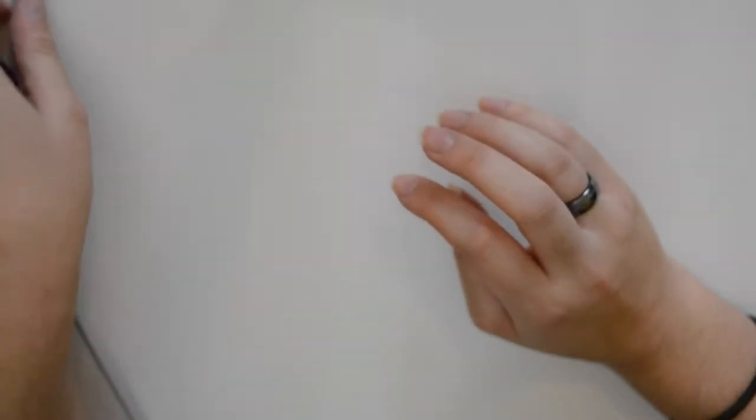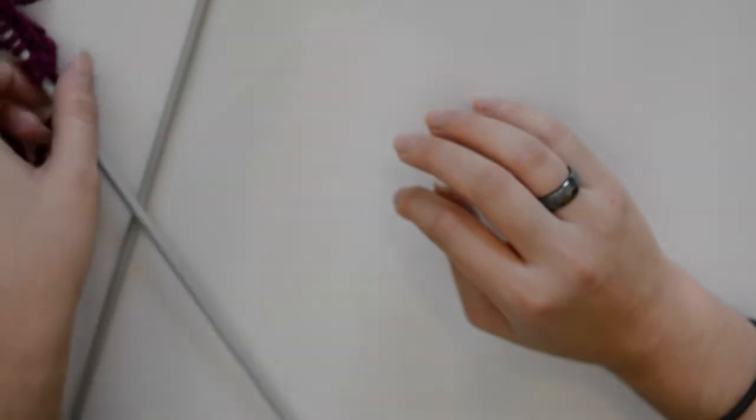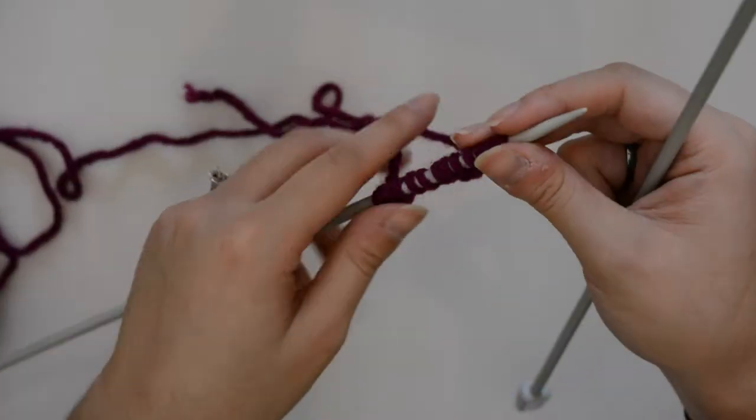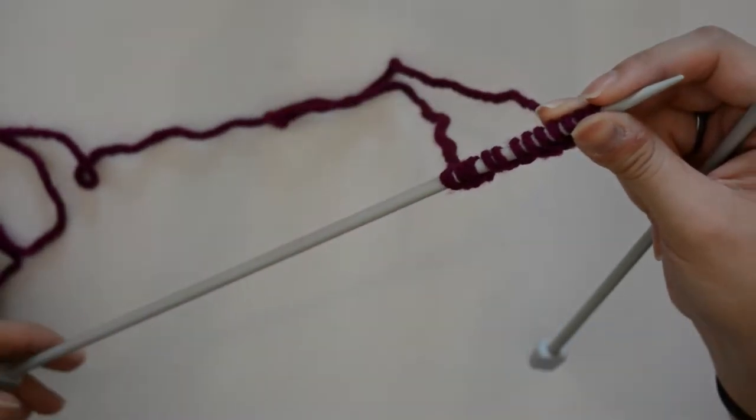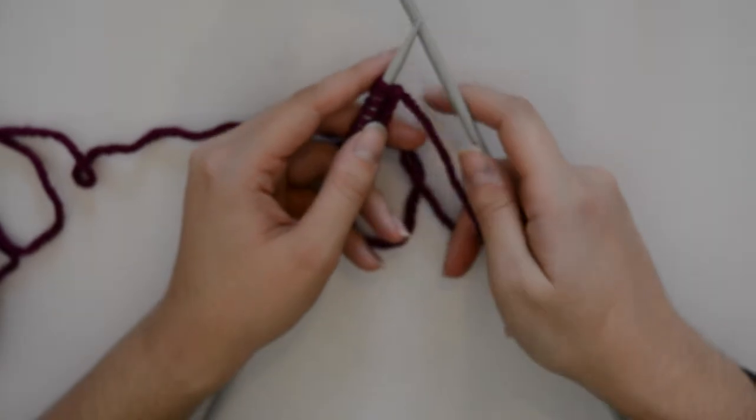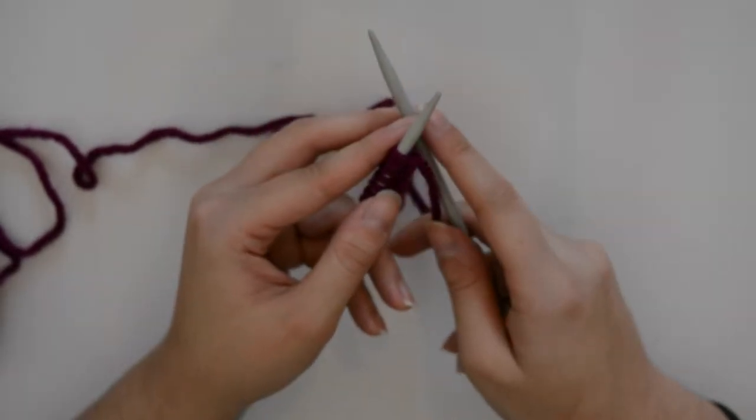This stitch I'm going to demonstrate using flat needles, working in rows. Stockinette stitch can be achieved in two ways, either on flat needles or by working in the round. We'll be looking at working it on flats today.